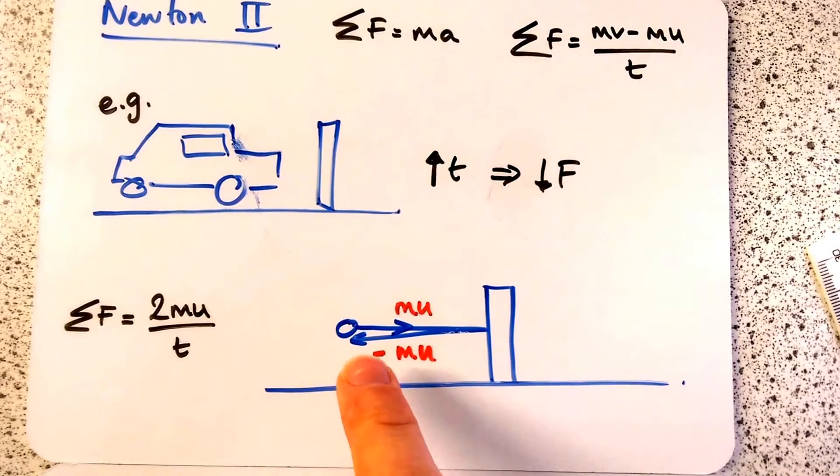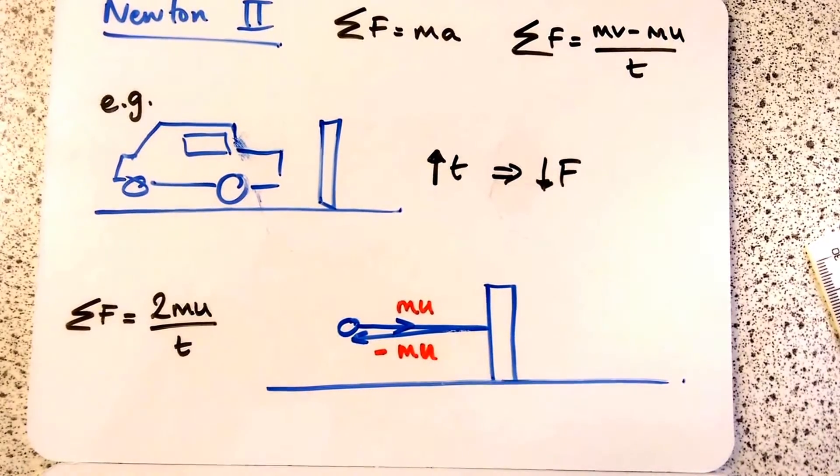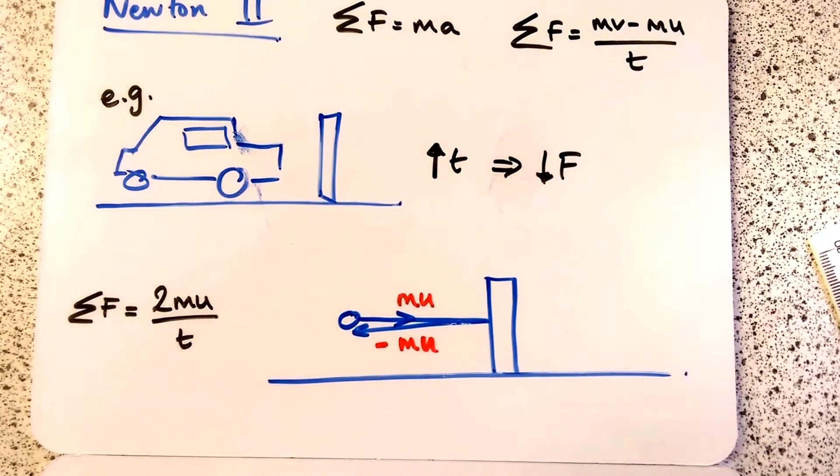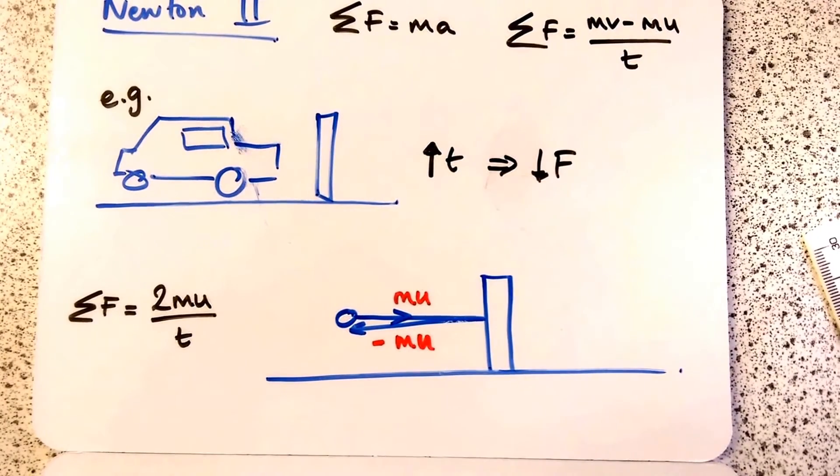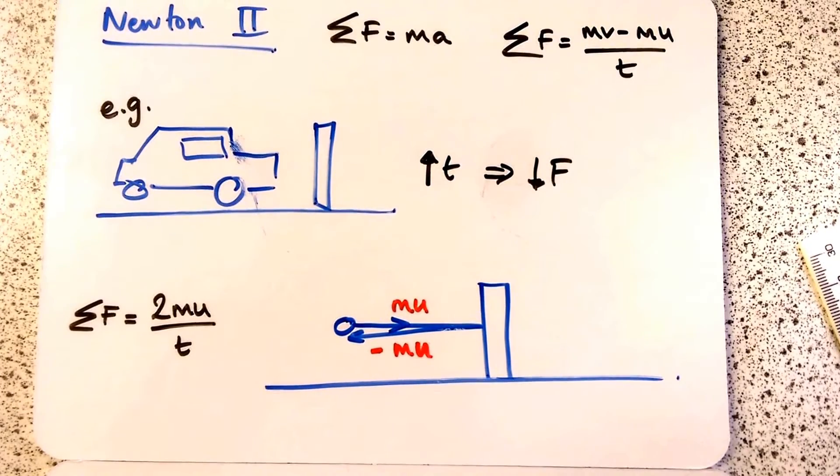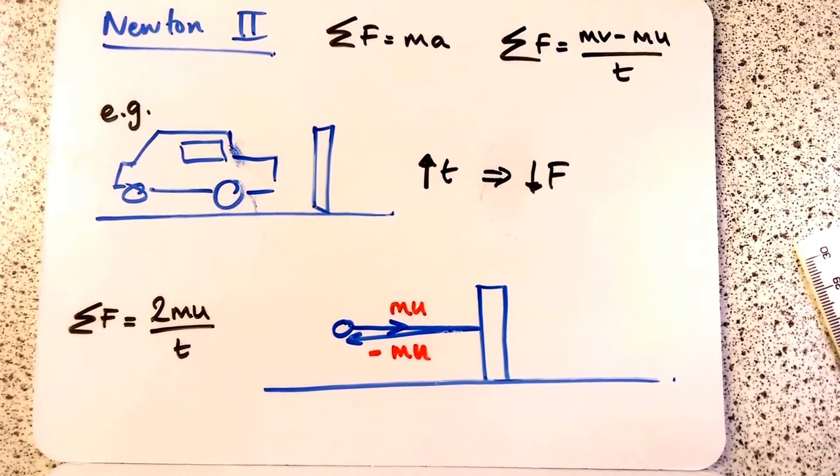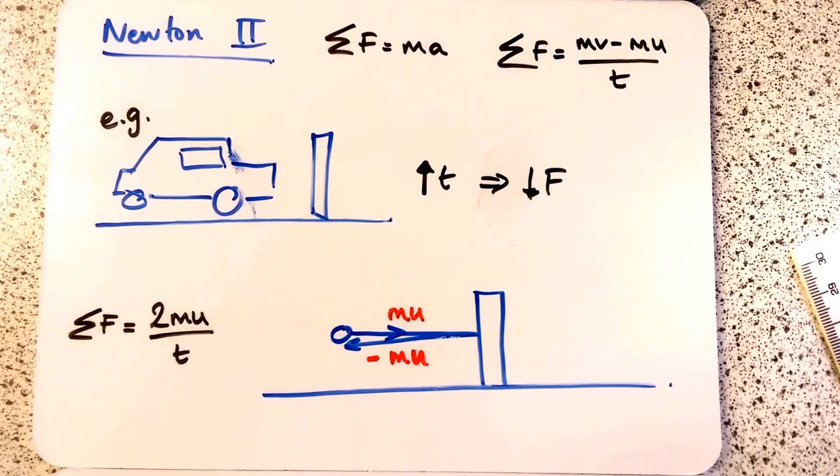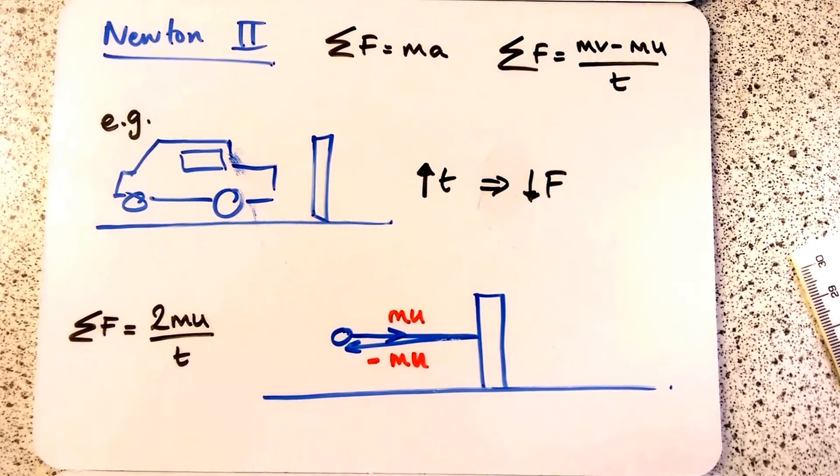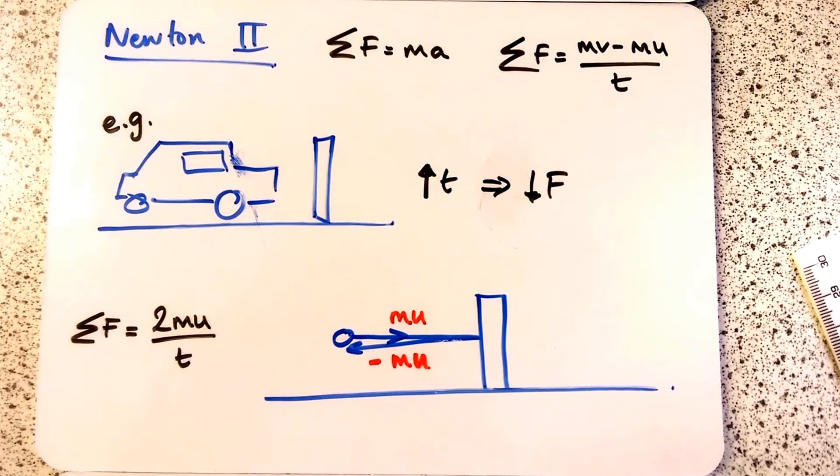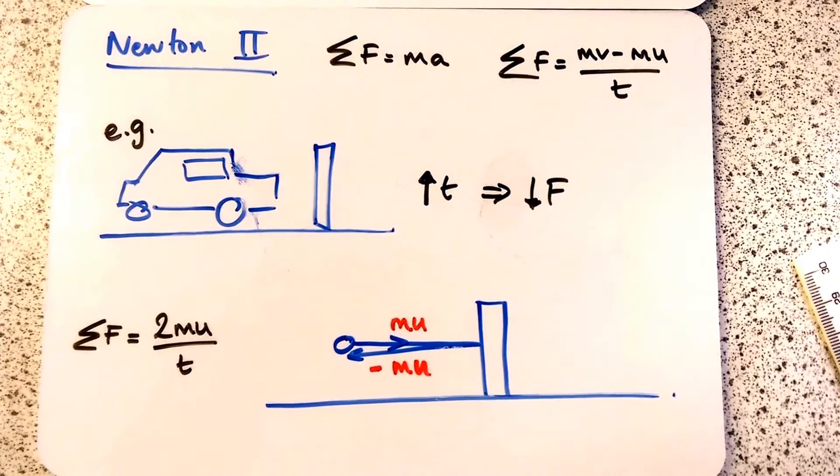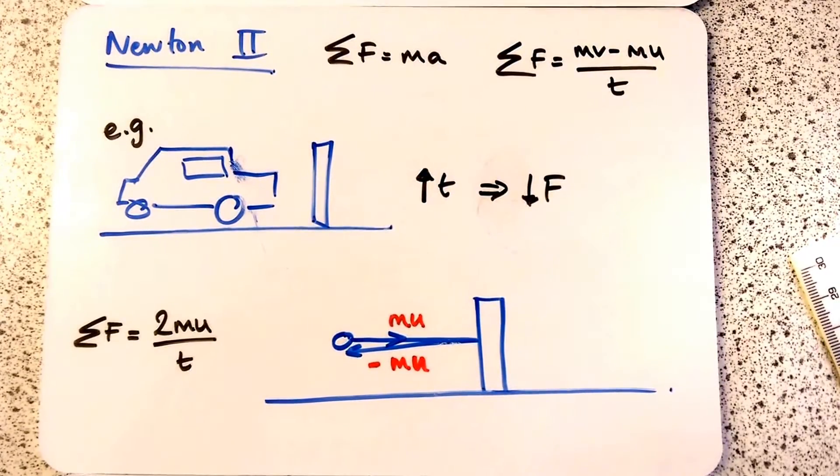Another interesting case - if a ball hits a wall and bounces off, we have the same momentum before and afterwards, but in opposite direction. The rate of change is quite large because you've actually gone through twice that initial momentum. So mu is the initial momentum, and mv is actually minus mu. The rate of change of momentum is 2mu over the time taken, so you're going to get a large force there.